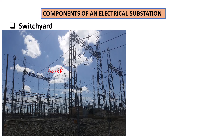So this 400 kilovolt transmission line will arrive at a switch yard and will then be stepped down to 132 kilovolt. This 132 kilovolt must then be transferred to another suburb or town which is not far away from the switch yard.